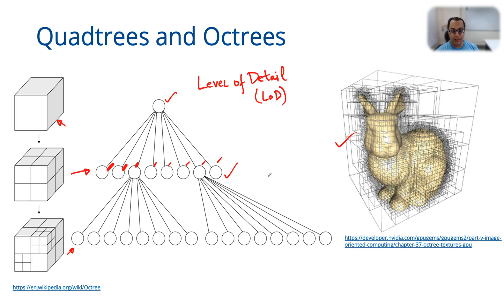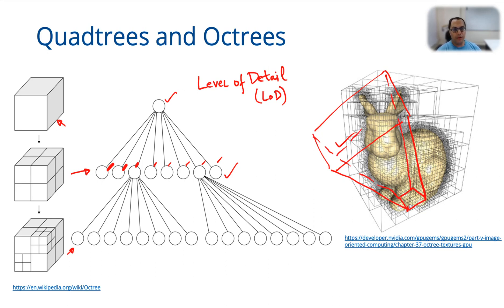How does this apply to visibility? Imagine that you have an object like a bunny rabbit being viewed by a camera with a view frustum. You need to figure out which parts of the object lie inside the view frustum and only pass those down the pipeline, throwing away everything else. If you do this check with the mesh itself, you need to figure out for every vertex whether it is inside or outside the view frustum, which is a very expensive check.